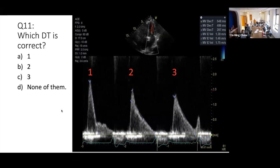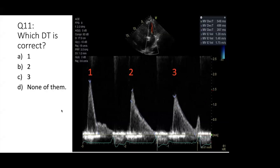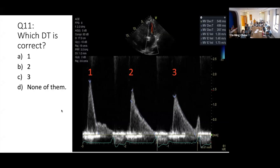Regarding how to measure deceleration time: from the B-point to the baseline is the correct measurement. If you take from an earlier point, it would still be acceptable depending on context, but the standard is from B to baseline.